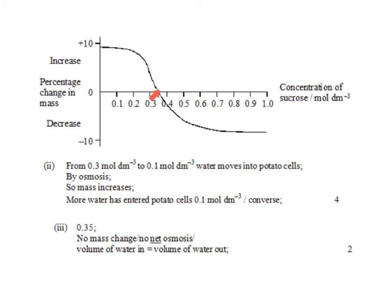At 0.35, the concentration of sucrose inside the potato is matched outside, so there is no net osmosis and no change in mass — the volume of water moving in equals the volume moving out. There is no water potential gradient at this point. After 0.35, water is moving out of the potato cell by osmosis, so it gets lighter.